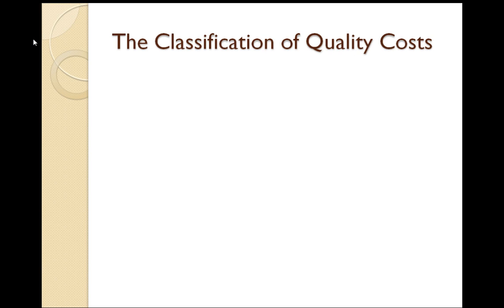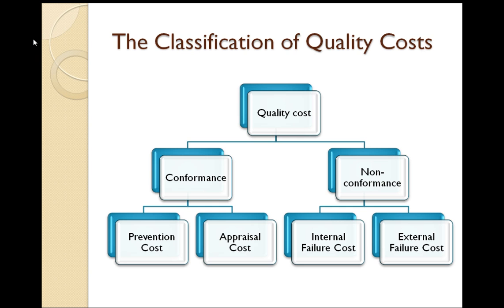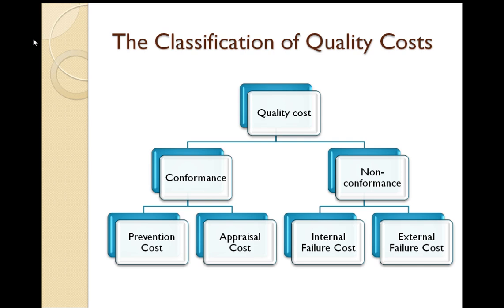The classification of quality costs: quality costs are classified into two, namely conformance costs and non-conformance costs. Conformance costs are subclassified into prevention costs and appraisal costs. Similarly, non-conformance costs are subclassified into internal failure costs and external failure costs.